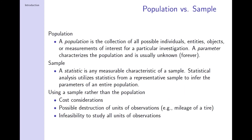It is very important to differentiate between a population and a sample throughout this class. A population is the collection of all possible individual entities, subjects, or measurements of interest for a particular investigation. There are parameters that characterize the population, and those parameters will be unknown basically forever. In order to learn something about the population parameters, you need to collect a sample, and once you have collected a sample, you can use statistics to analyze it. It should be a representative sample, and based on statistics you can infer something about the parameters of the entire population.